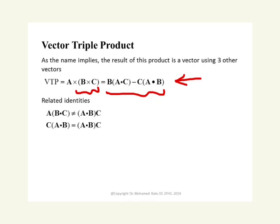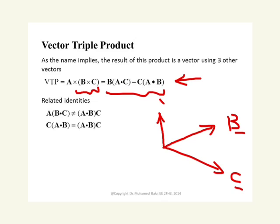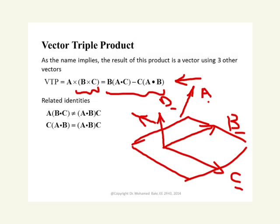This cross product has a property that it gives a vector in the plane of B and C. If you have two vectors B and C and do a cross product between them, you get a vector D normal to their plane. If there is another vector A somewhere in space and you cross product A and D, you get a vector normal to the plane of A and D. Because it is normal to D, which is normal to B and C, it must be parallel to the plane of B and C, so it can be expanded as a summation of the B and C vectors.